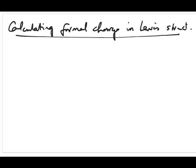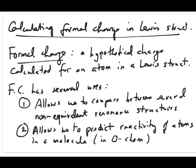One concept you need to understand in Lewis structure is a concept referred to as a formal charge. A formal charge is basically a hypothetical charge that you can calculate for any atom in a Lewis structure.